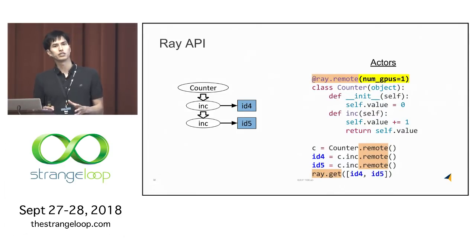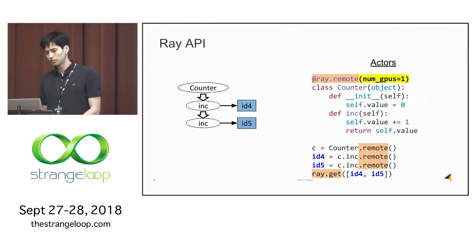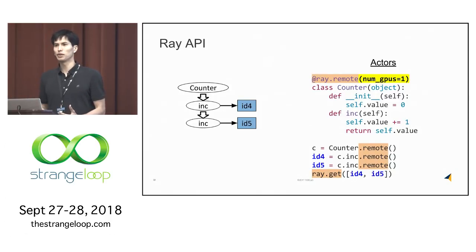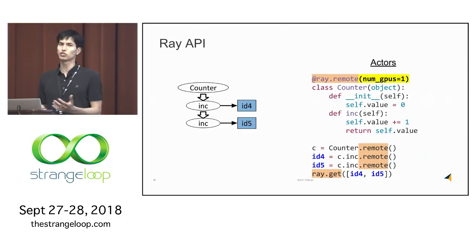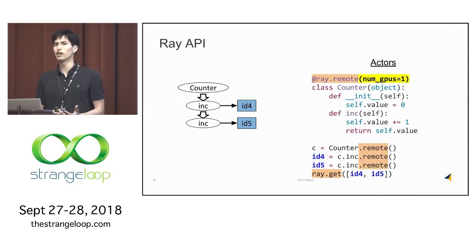These two abstractions—tasks and actors—work on top of the same dynamic task graph under the hood, and mutable state is encoded in that graph abstraction. They are very interoperable: just as in Python you use both functions and classes together, here you can compose tasks and actors, nesting them within each other, and they interoperate pretty seamlessly.